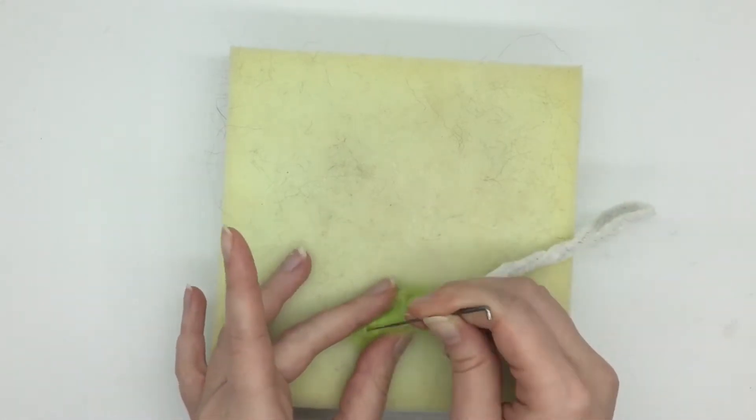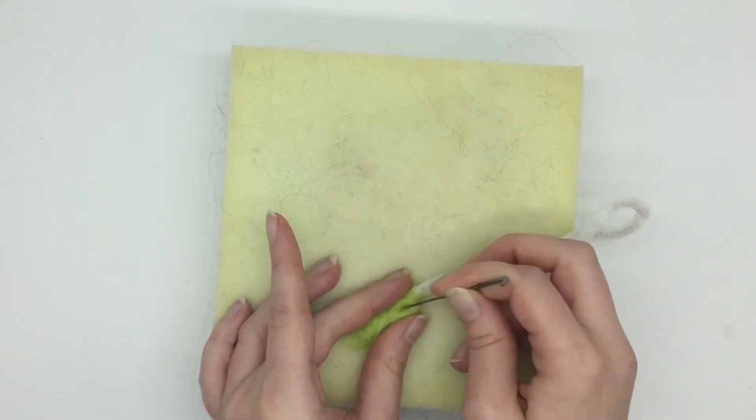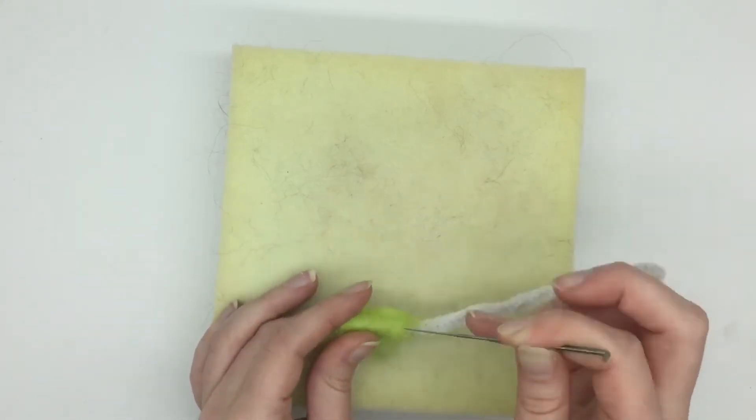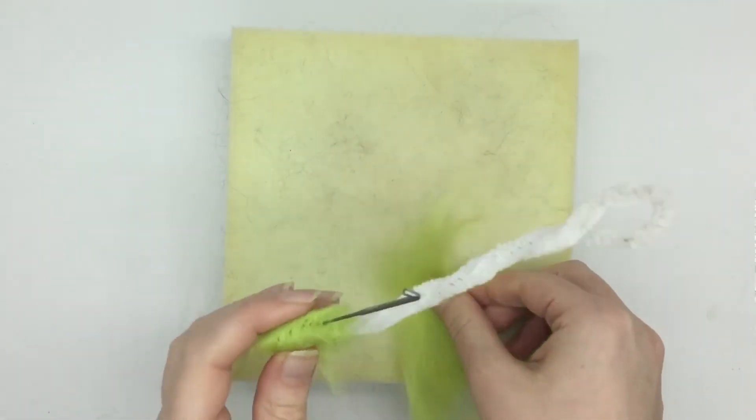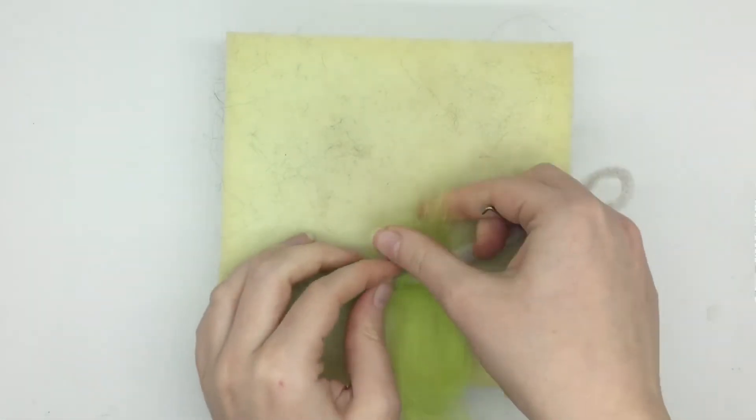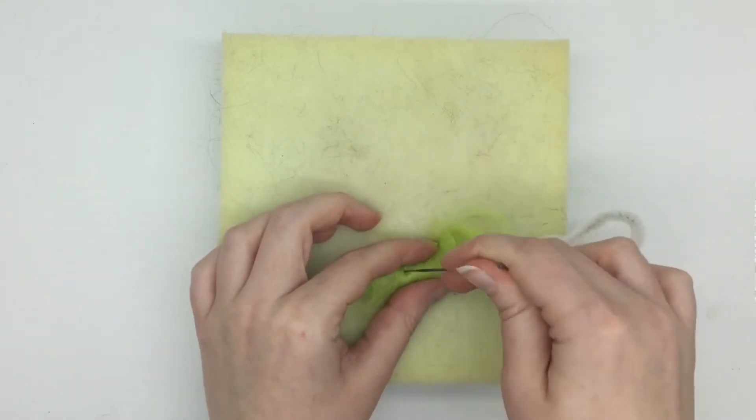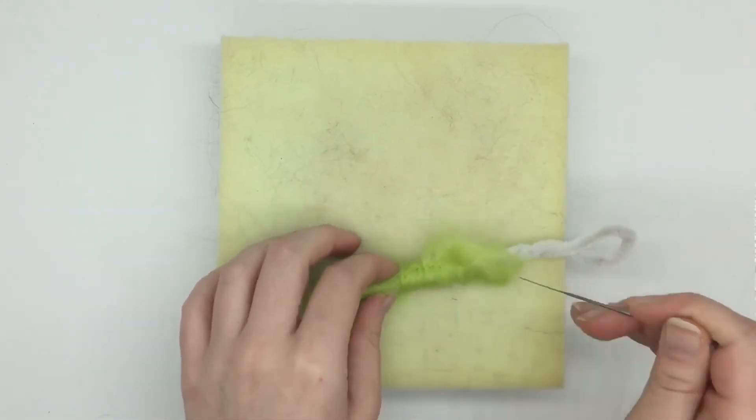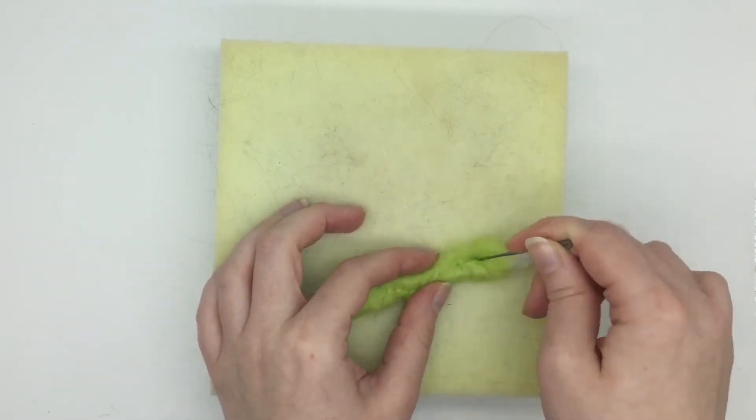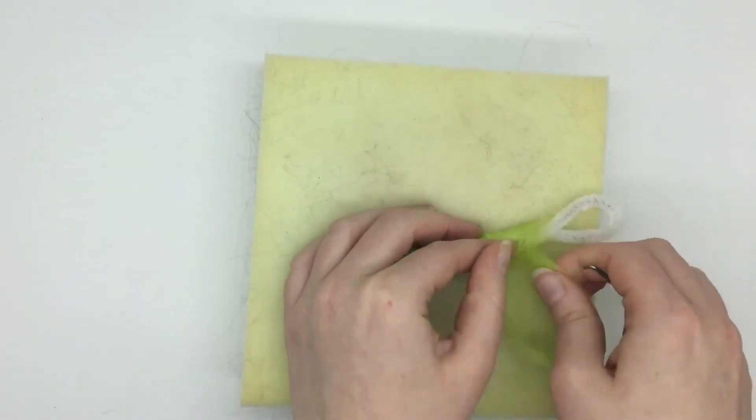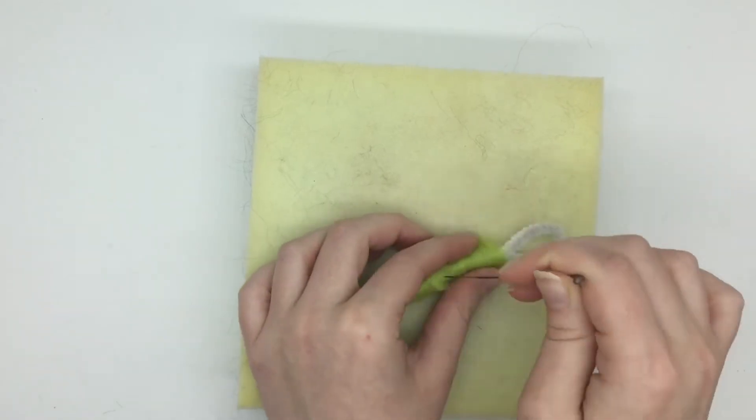Then you just want to felt that wool in place. The best thing to do is felt either side of the pipe cleaner, because otherwise there is a risk of you breaking your felting needle if you felt directly onto the pipe cleaner itself. You want to repeat this process of felting the green wool further up so that the whole stem is covered in green.